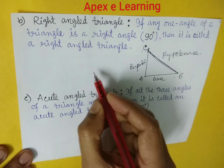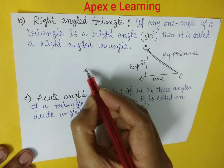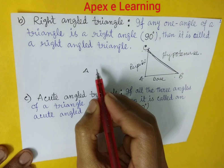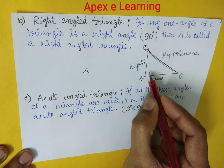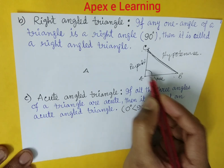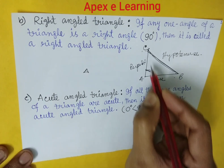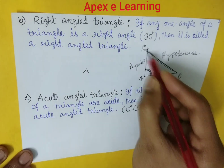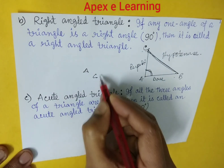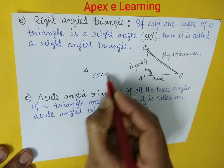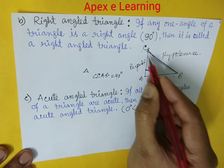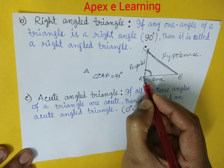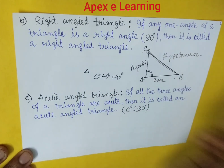Figure ABC is a right angle triangle whose one angle is 90 degrees — angle B is 90 degrees. So that is called a right angle triangle.